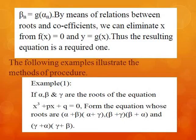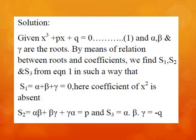We are given that x³ + px + q = 0, and α, β, and γ are the roots of the given cubic equation. Therefore, by using the concept of relations between roots and coefficients, we can determine s₁, s₂, and s₃ as follows.